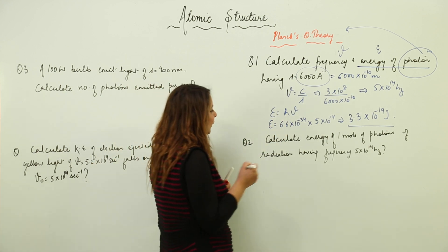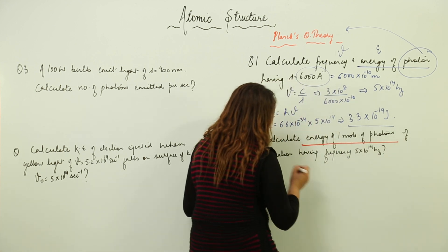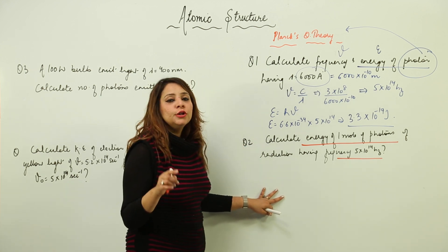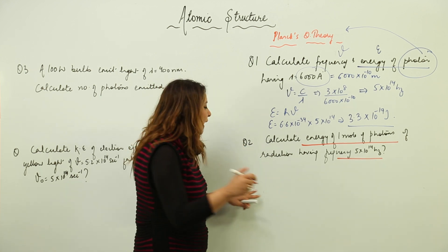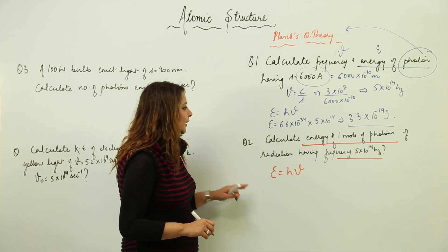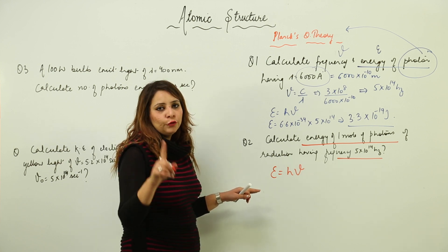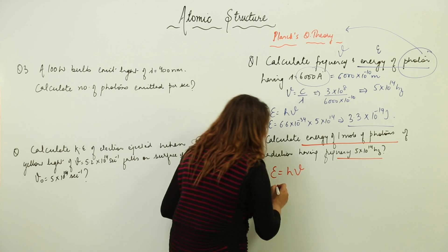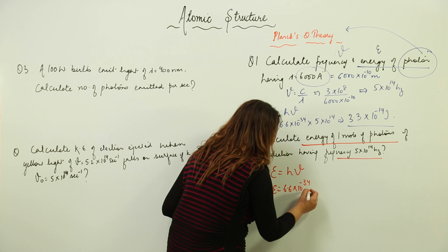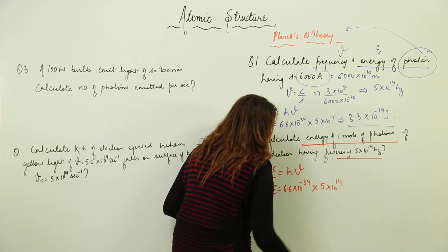The second question: find the energy of one mole of photons having frequency 5 × 10¹⁴ Hz. The first step is to find the energy of one photon using E = hν. Putting in values: h = 6.6 × 10⁻³⁴ and ν = 5 × 10¹⁴.